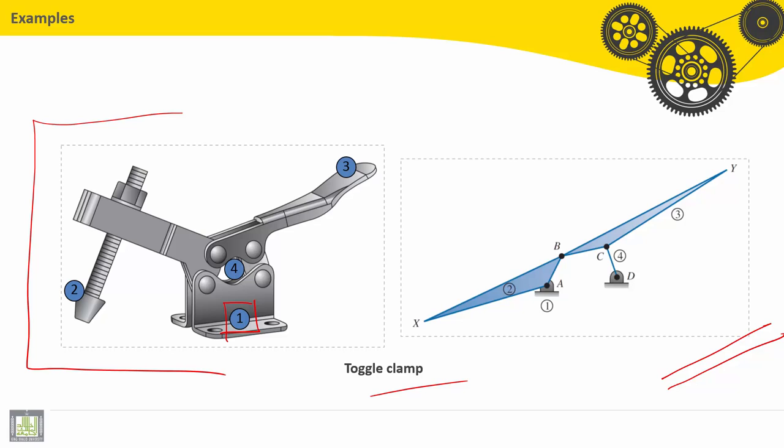Part number one is still the ground here. Part number two is similar to a triangle.